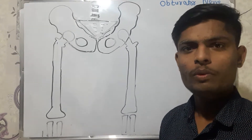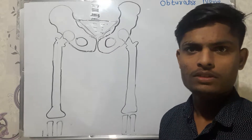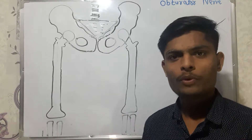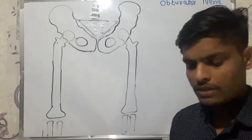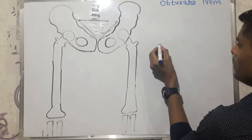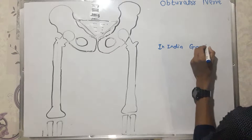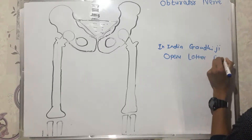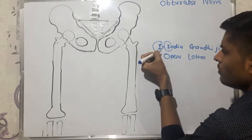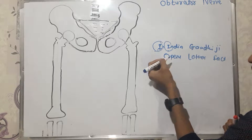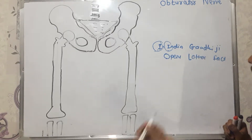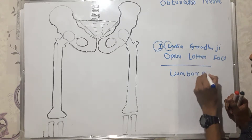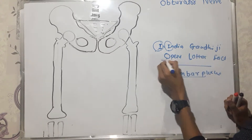Whenever we discuss nerves in anatomy, we go from origin, to course, then branches. The obturator nerve arises from the lumbar plexus. We already discussed the lumbar plexus and its branches using the mnemonic 'In India Gandhiji Opens Lottery Factory': II for ilio-inguinal and ilio-hypogastric nerves, G for genitofemoral nerve, O for obturator nerve, L for lateral cutaneous nerve of thigh, and F for femoral nerve. The obturator nerve is one branch from the lumbar plexus.